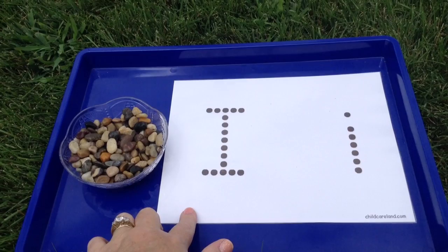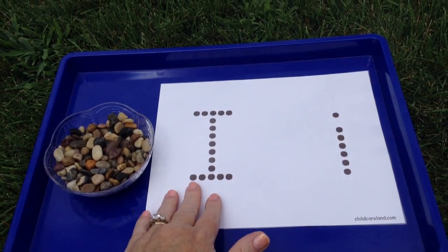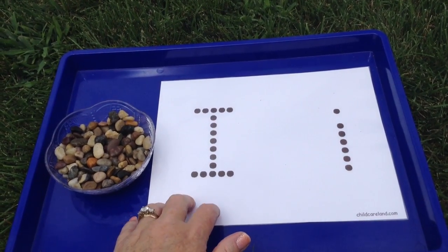What I've done here is I printed them on cardstock paper, laminated them, and then attached them with double-sided sticky tape onto our tray.